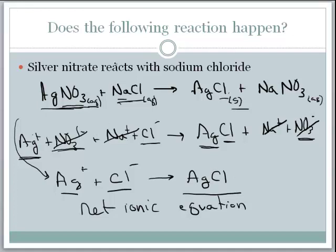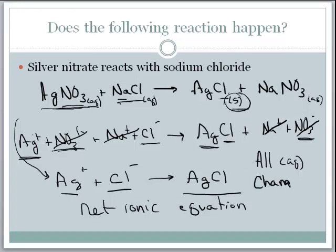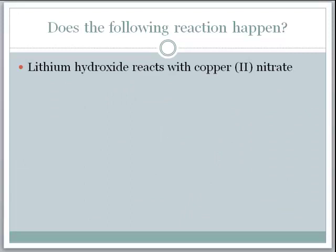To determine if a double replacement reaction happens, determine your subscripts using your solubility rules. If all compounds are aqueous, the reaction doesn't happen. If anything is insoluble — if something changes and a solid is produced — then the reaction does happen. This is a quick overview; I'll produce another video and spend more time on double replacement reactions.